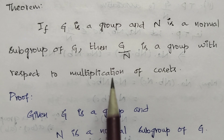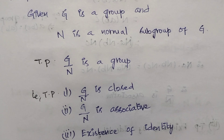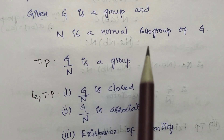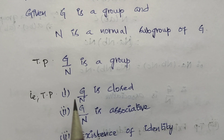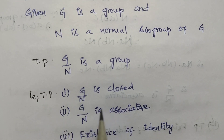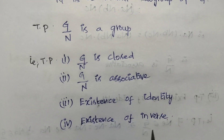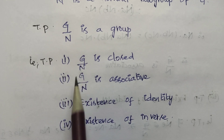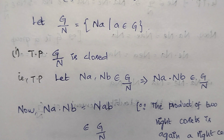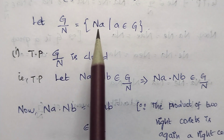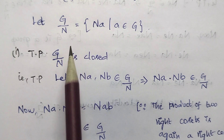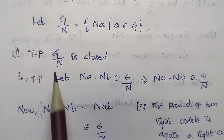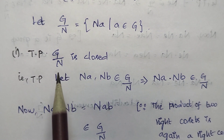To prove G/N is a group, we need to satisfy 4 axioms. G/N is the collection of all right cosets under multiplication. G/N equals the set of Na such that a belongs to G. First axiom: we check closure. To prove G/N is closed, we take two right cosets Na and Nb.